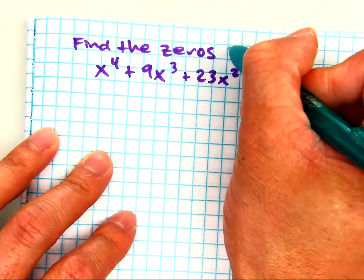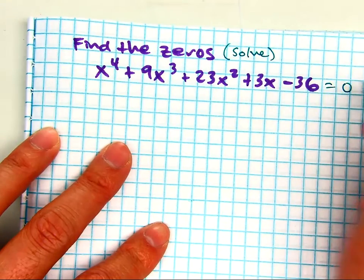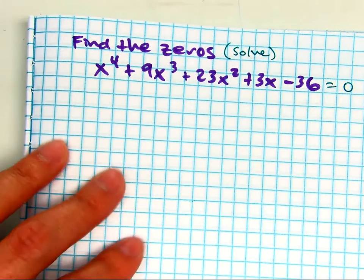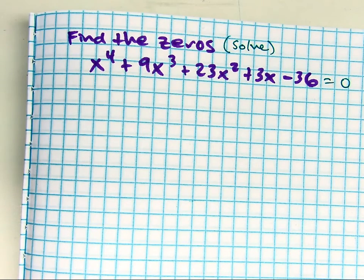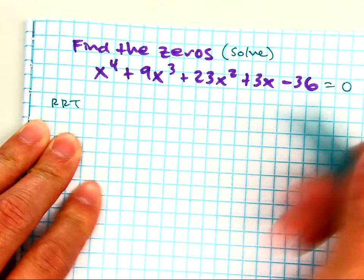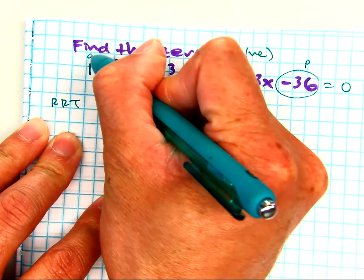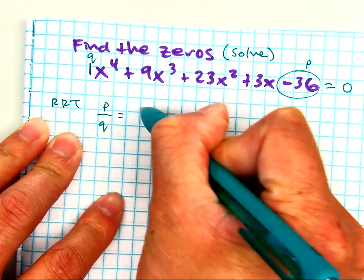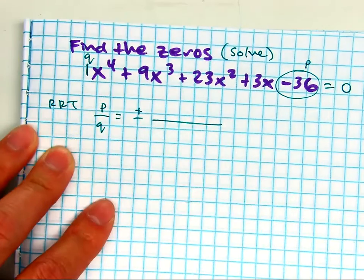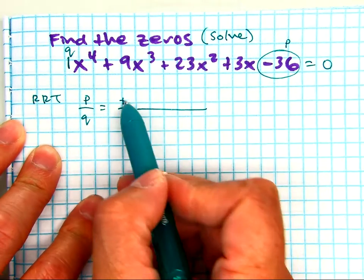Another way of saying find the zeros is also solve. So we're going to have to set this equal to zero. We're going to have to use the rational roots theorem. This is your p value. The one is your q value. So p divided by q. Let's get out all of our combinations. It's just an absolute value because it's both plus and minus.